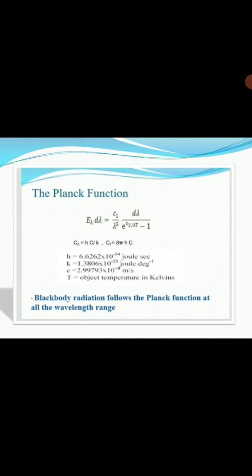The Planck function: E lambda d lambda equals C1 over lambda to the power 5 d lambda over E to the power C2 by lambda T minus 1, where C2 equals h C by k and C1 equals 8 pi h C. The value of h is 6.6262 multiplied by 10 to the power minus 34 Joule second, k equals 1.3806 multiplied by 10 to the power minus 23 Joule per degree, C equals 2.99793 multiplied by 10 to the power 8 meter per second, and T is the object temperature in Kelvin.